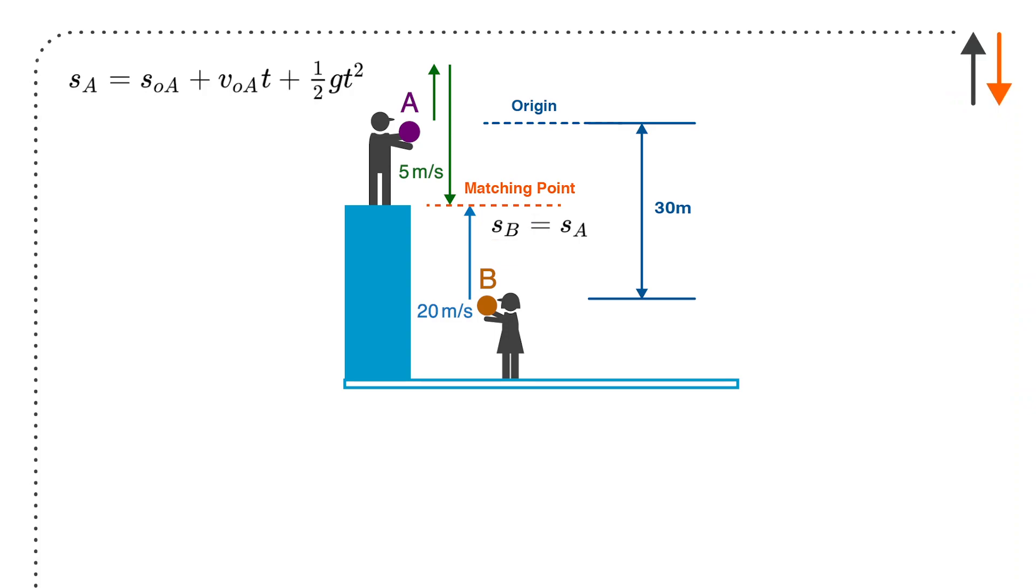So if I look at the projectile motion equation, I have the same ones. I have SA, which is the position of the ball at any instant, which is with respect to its original location, the initial velocity of ball A, which is 5 meters per second, the time it takes to get there, then the acceleration, which is 0.5 gt squared. Now, normally, depending on the case, I might actually set it as negative. But here I haven't.